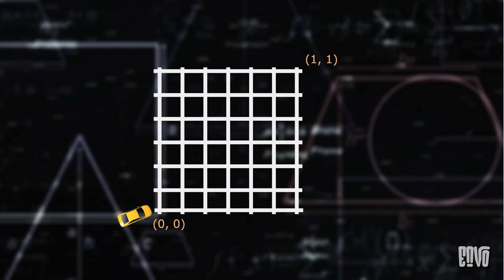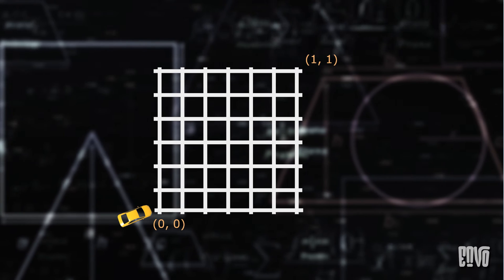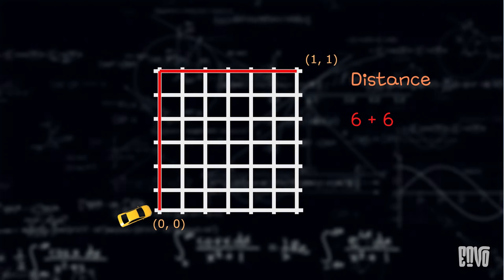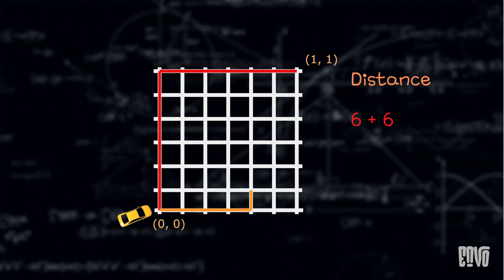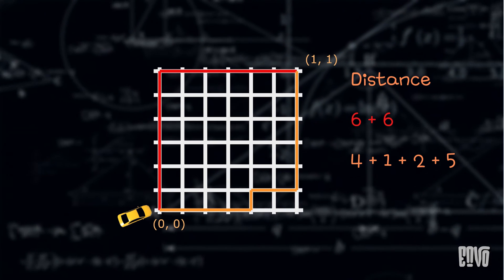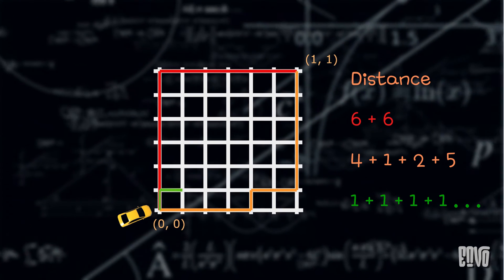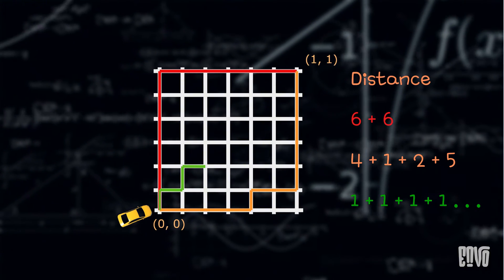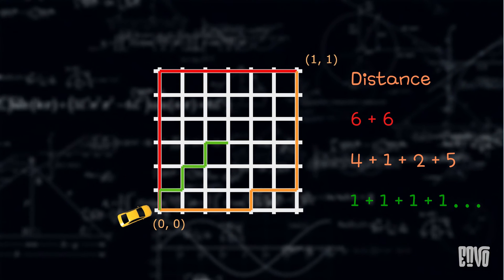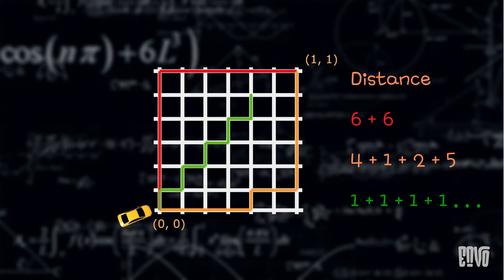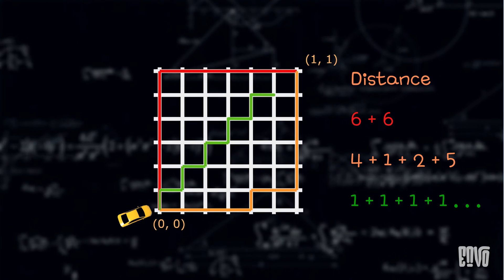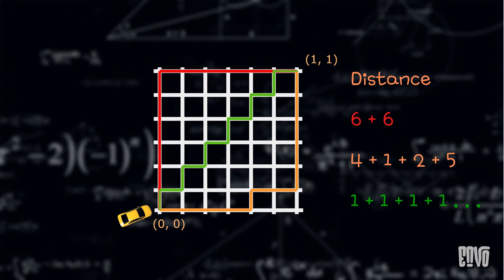So, in taxicab geometry, the staircase path is the shortest path and its length is the same as the diagonal length. This is precisely why the staircase paradox doesn't exist in taxicab geometry. The rules of movement are different. It highlights how the definition of distance fundamentally impacts our geometric understanding.